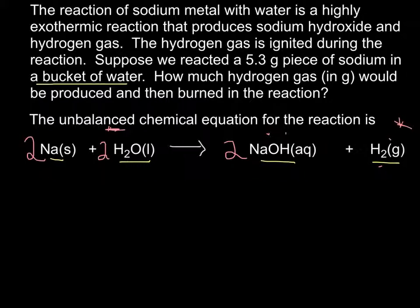Now, what do we do to solve this problem? We're starting with mass of sodium, which is a reactant, and we want to figure out how much hydrogen gas we're going to get. We're reacting in a bucket of water, which means water is in excess — there's lots and lots of water around — so this is not a limiting reactant problem. We can assume we react all of our sodium metal to produce hydrogen gas.